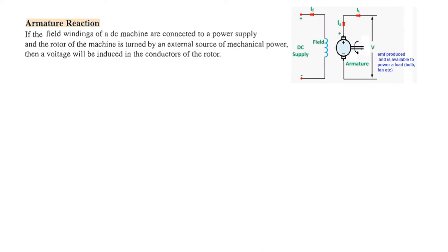Before going into the solution of the problem, let's discuss an important theoretical part called armature reaction. If the field winding of a DC machine is connected to a power supply, it will produce a magnetic field. When the rotor of the machine is turned by an external mechanical power — by hand, wind power, or turbine — a voltage will be induced in the conductors of the rotor.